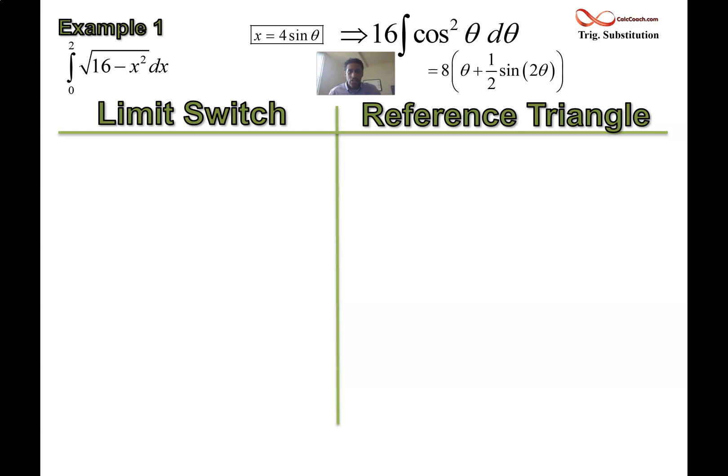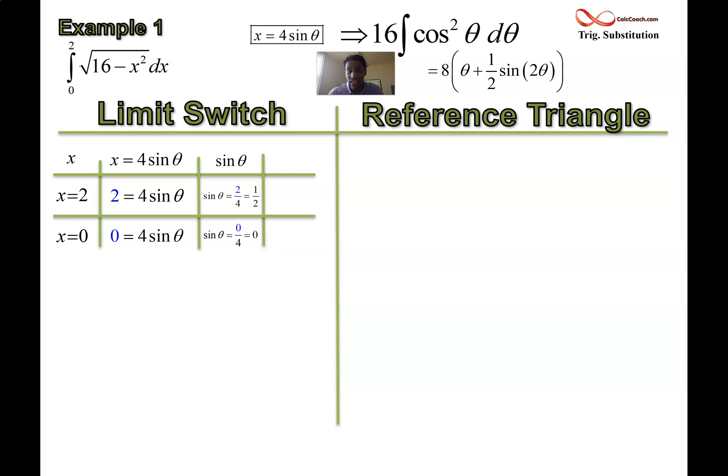On the left hand, we're going to do the limit switch. On the right hand, the reference triangle. When I do a limit switch, I like to have an organized chart with the original values, the actual substitution that I made, and then the new values. I started with an upper limit of 2 and a lower limit of 0. My substitution was to let x equal 4 sine theta. So 2 equals 4 sine theta, and 0 equals 4 sine theta. To figure out what theta is, we solve for the trig. Solve for sine theta - on the one hand it's 2 over 4 or a half, on the other hand it's just 0.